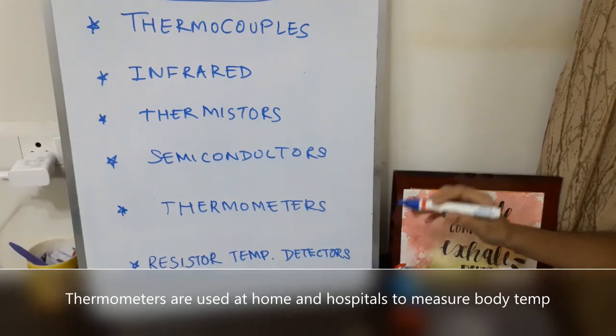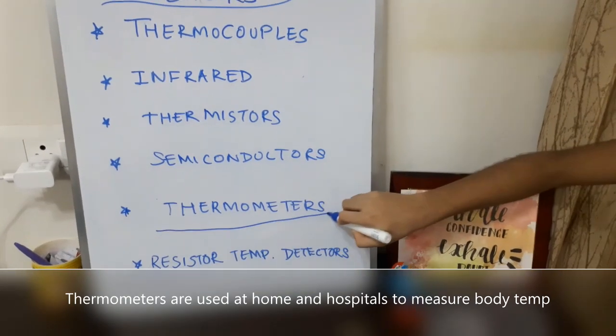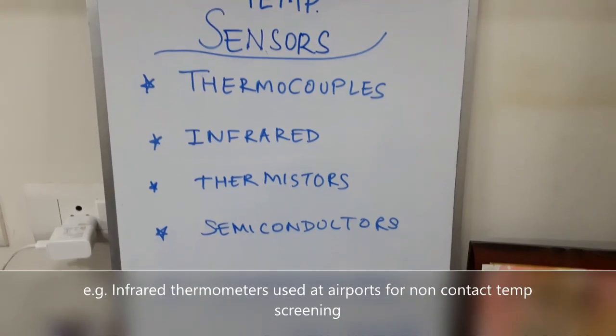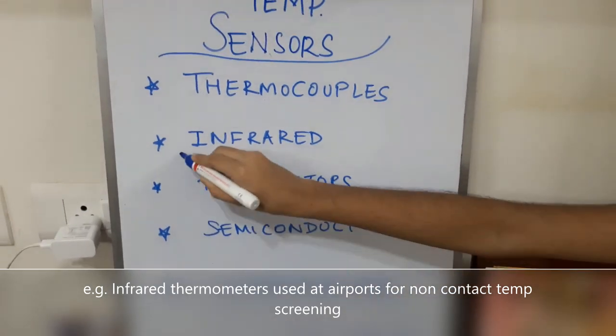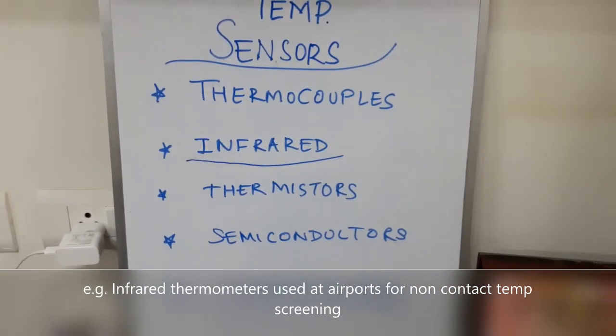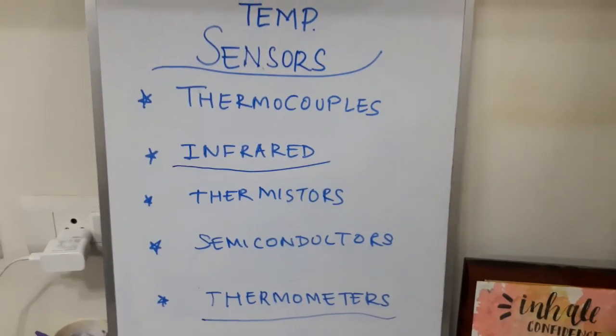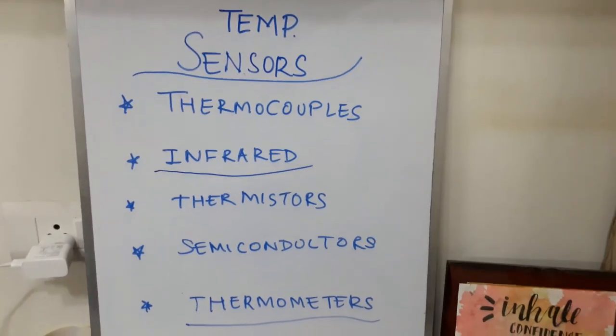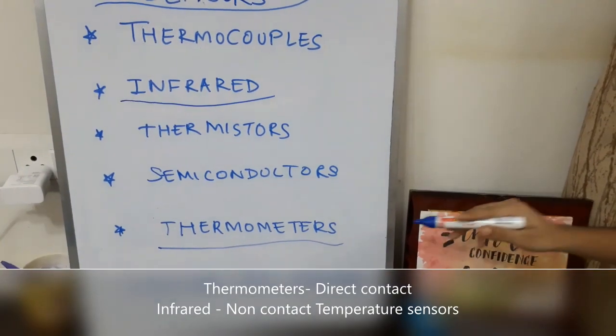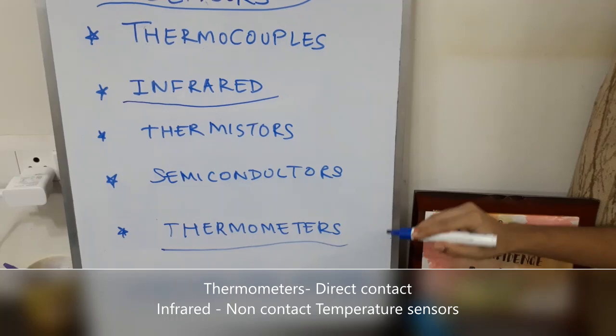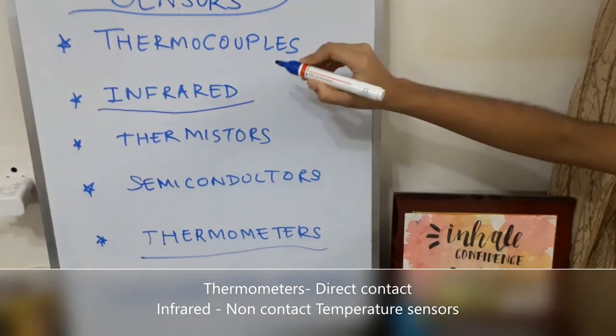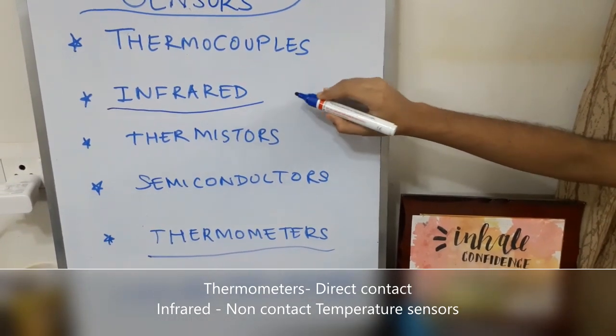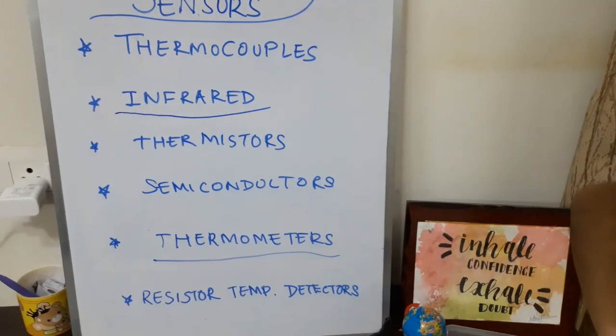Out of these, you might have used thermometers. You might have also come across infrared sensors, which are used at the airport for contactless temperature screening. Thermometers are direct contact temperature measuring sensors, while infrared are non-contact temperature measuring sensors.